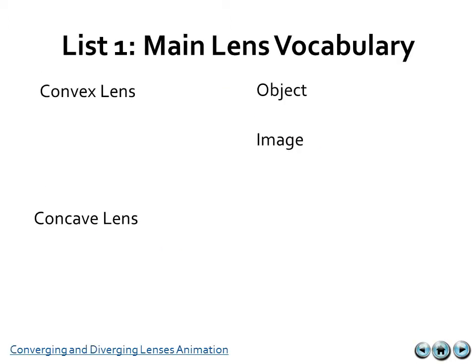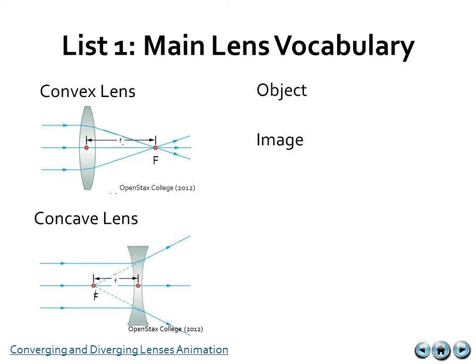So to start off, we need to look at the main list of vocab. We have the convex lens, which is considered a converging lens. It's bringing light toward a specific focal point, and its opposite would be the concave lens. It diverges light away from a focal point. We're going to focus on the convex lens, but it's important to know both and understand that they are opposites of each other.